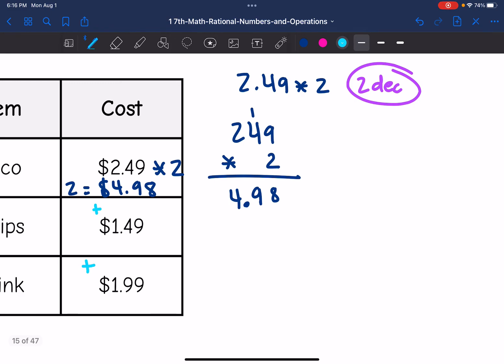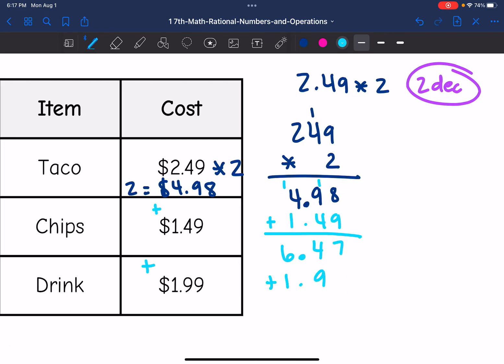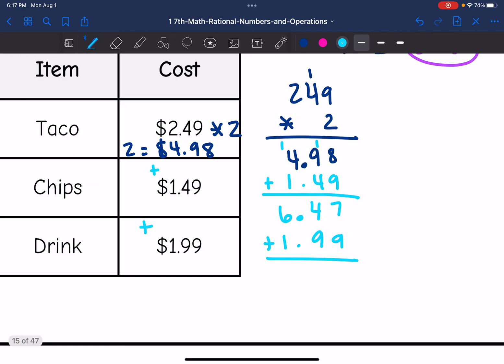We're going to do $4.98 plus 1.49. 8 plus 9 is 17, 1 plus 9 is 10 plus 4 is 14, 1 plus 4 plus 1 is 6. So there's with the chips, and now let me add the drink, $1.99. So 7 plus 9 is 16, 1 plus 4 is 5, 5 plus 9 is 14, 1 plus 6 plus 1 is 8.